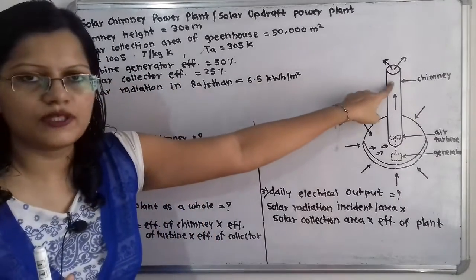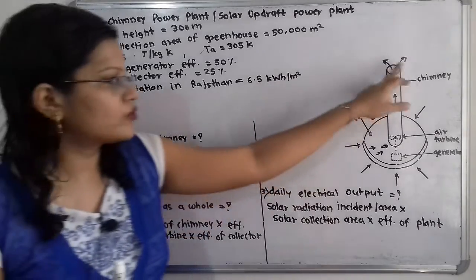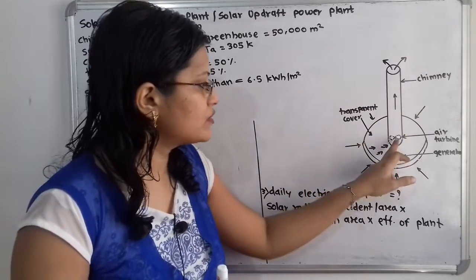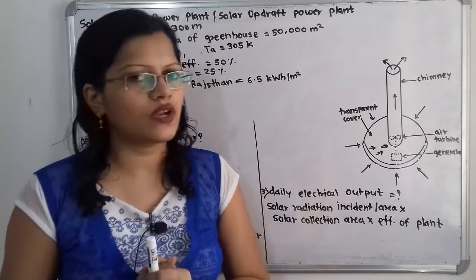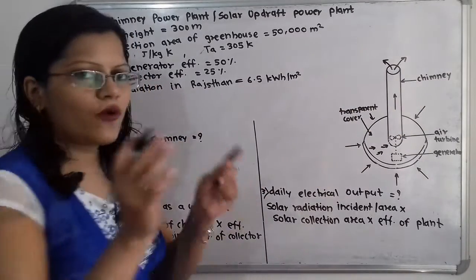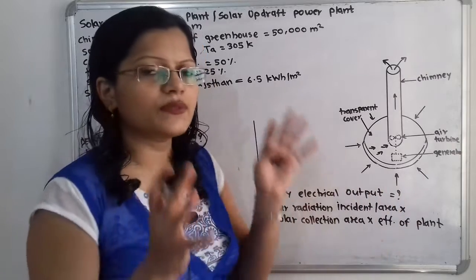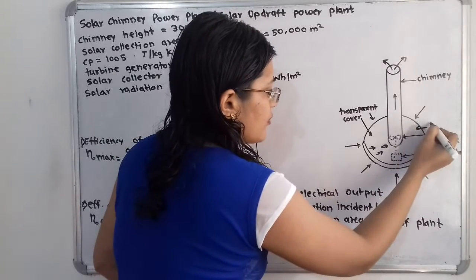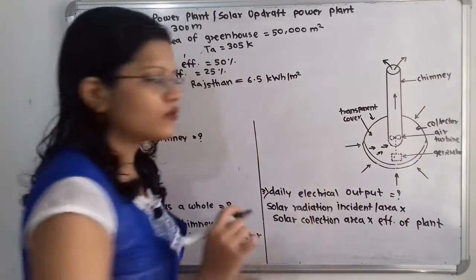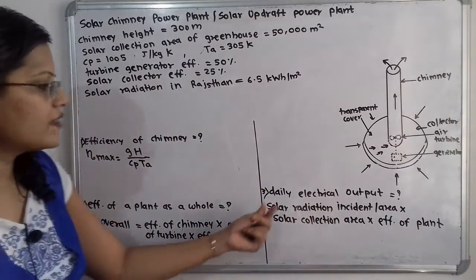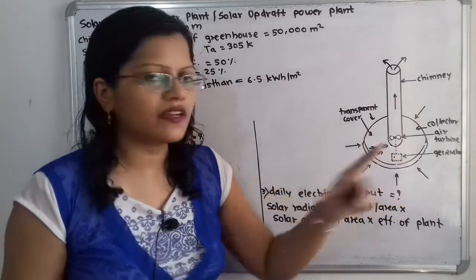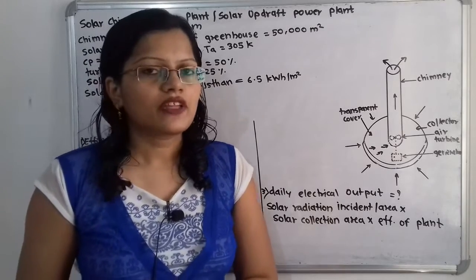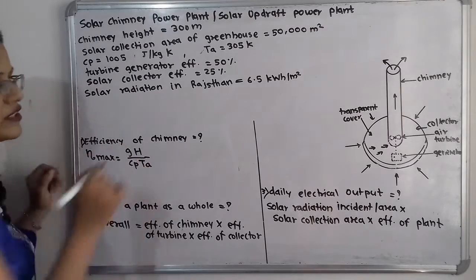We need to find: the efficiency of the chimney, the overall efficiency of the plant as a whole (which considers chimney efficiency, turbine-generator efficiency, and solar collector efficiency), and the daily electrical output from the generator.